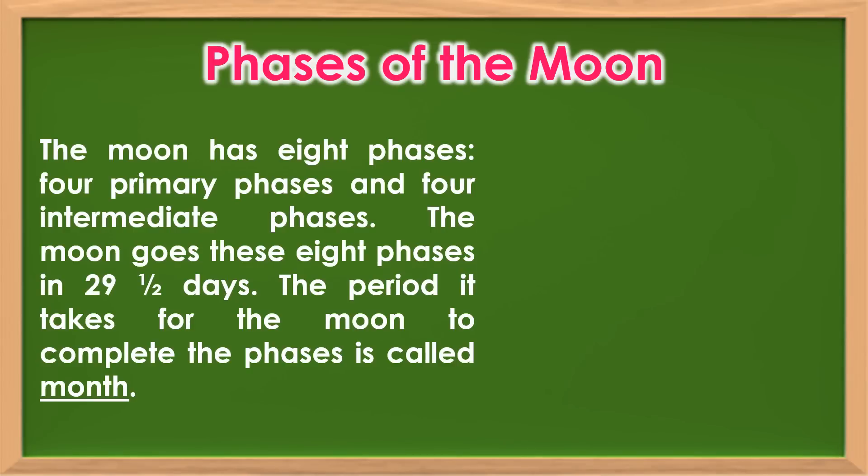The moon has 8 phases: 4 primary phases and 4 intermediate phases. The moon goes through these 8 phases in 29 and a half days. The period it takes for the moon to complete the phases is called a month.